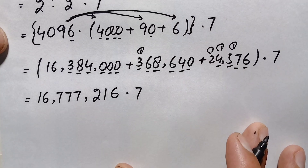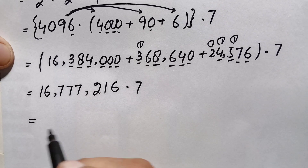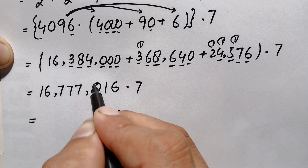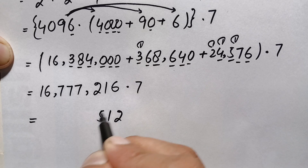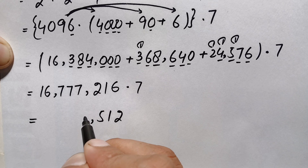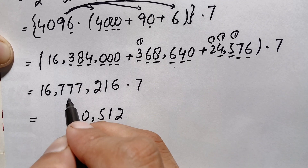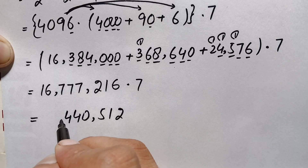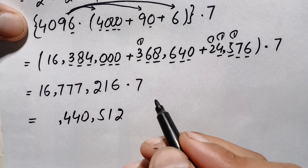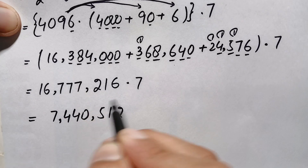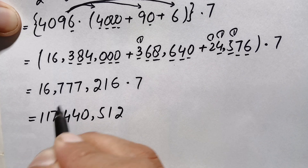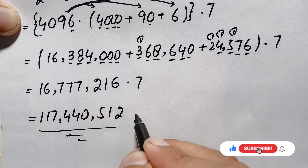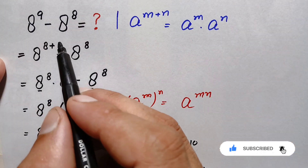Now we multiply 16,777,216 by 7. Starting from the ones: 7 times 6 is 42 (write 2, carry 4); 7 times 1 is 7 plus 4 is 11 (write 1, carry 1); 7 times 2 is 14 plus 1 is 15 (write 5, carry 1); 7 times 7 is 49 plus 1 is 50 (write 0, carry 5); 7 times 7 is 49 plus 5 is 54 (write 4, carry 5); 7 times 6 is 42 plus 5 is 47 (write 7, carry 4); 7 times 1 is 7 plus 4 is 11. The final answer is 117,440,512.